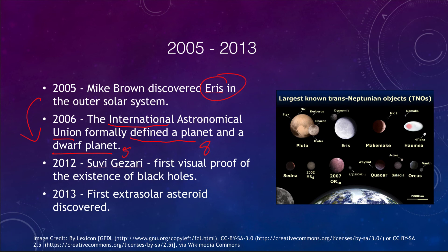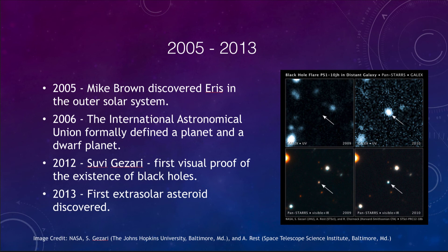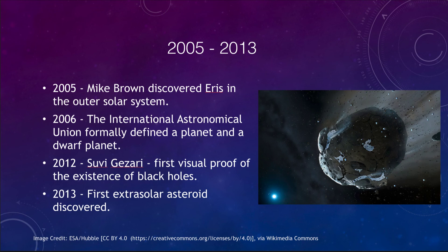In 2012, we got the first visual confirmation of black holes, thanks to work by Suvi Gezari, providing visual proof of black hole existence for the very first time. And in 2013, an extrasolar asteroid was discovered — an object not from our solar system but one that had traveled through interstellar space and came close enough to our solar system to be studied. It was the first interstellar asteroid ever observed.